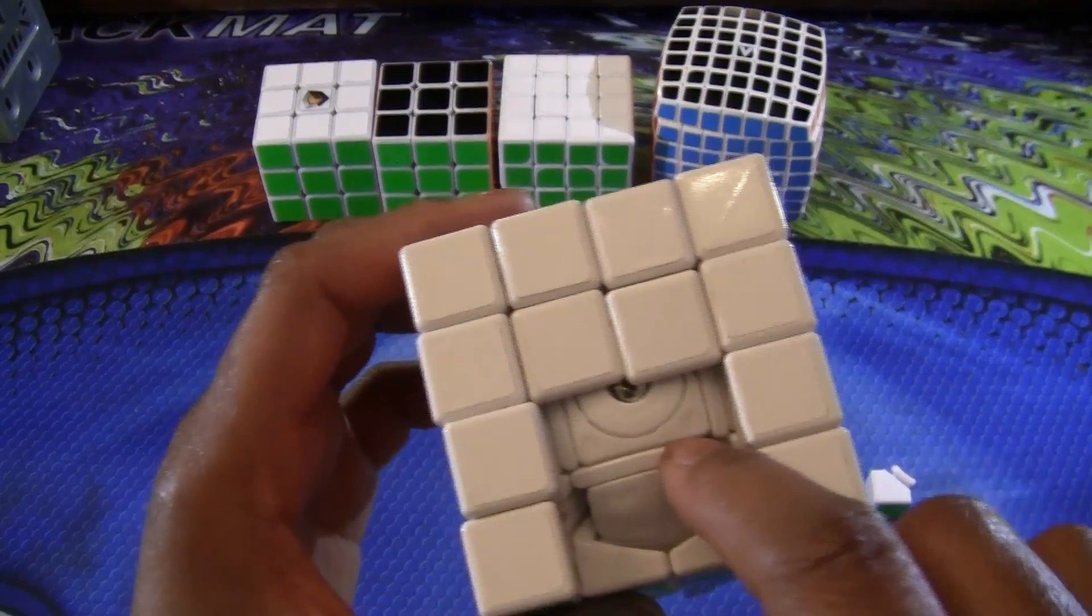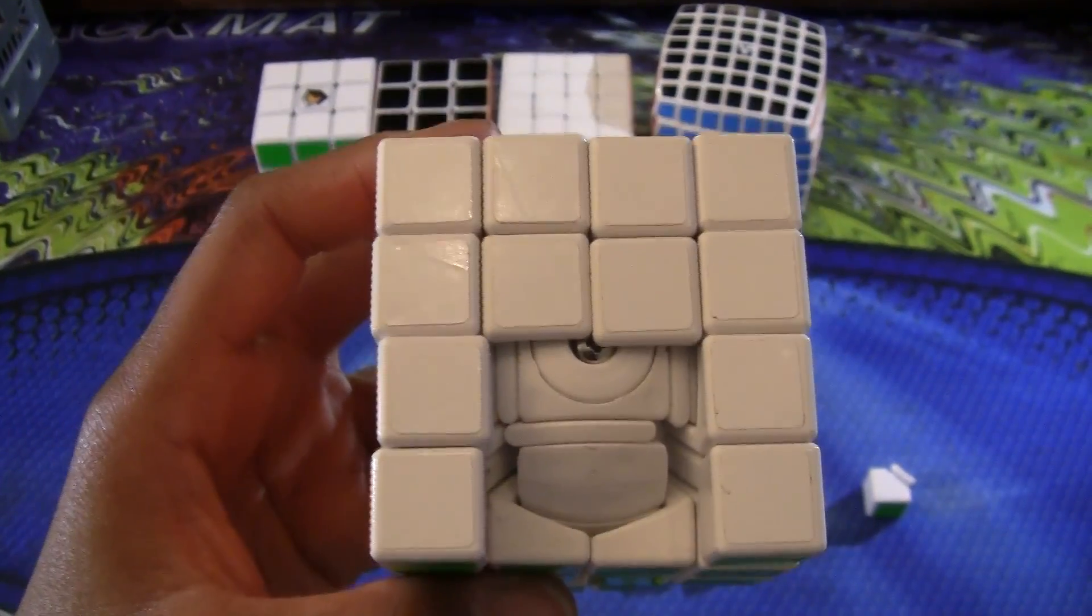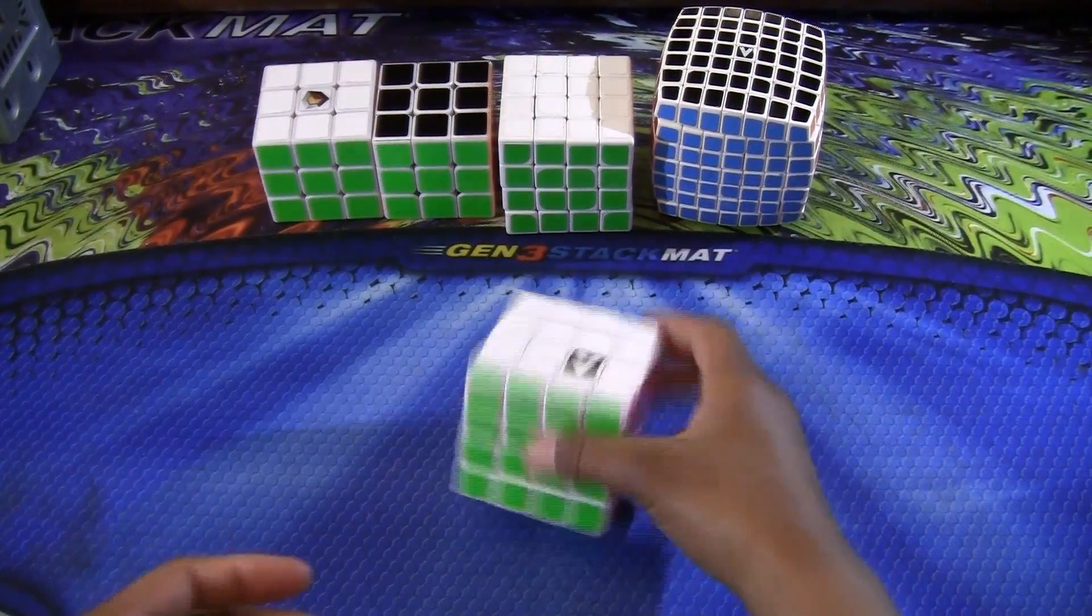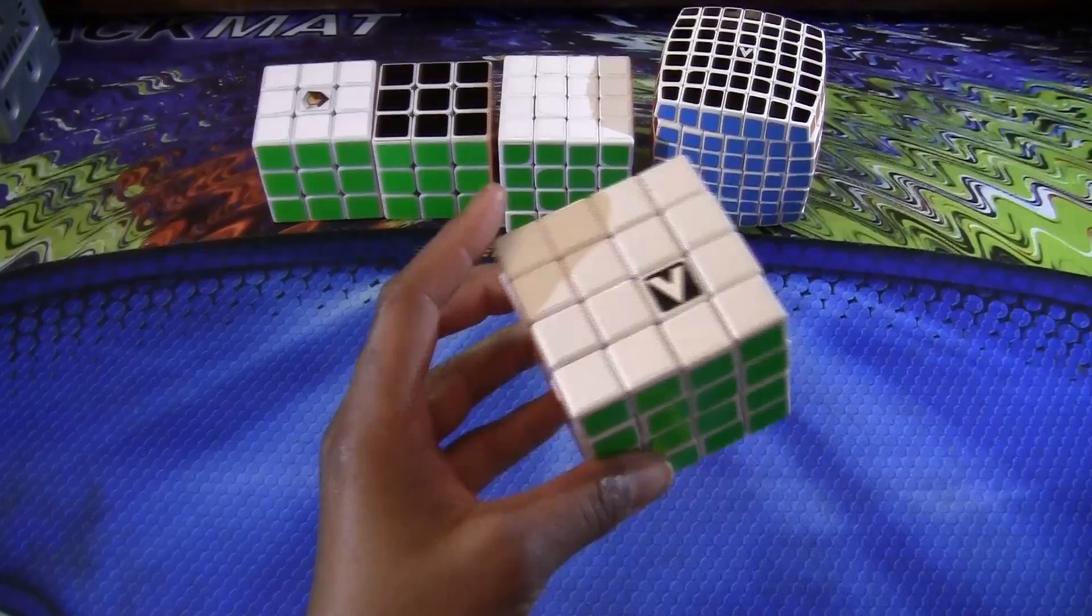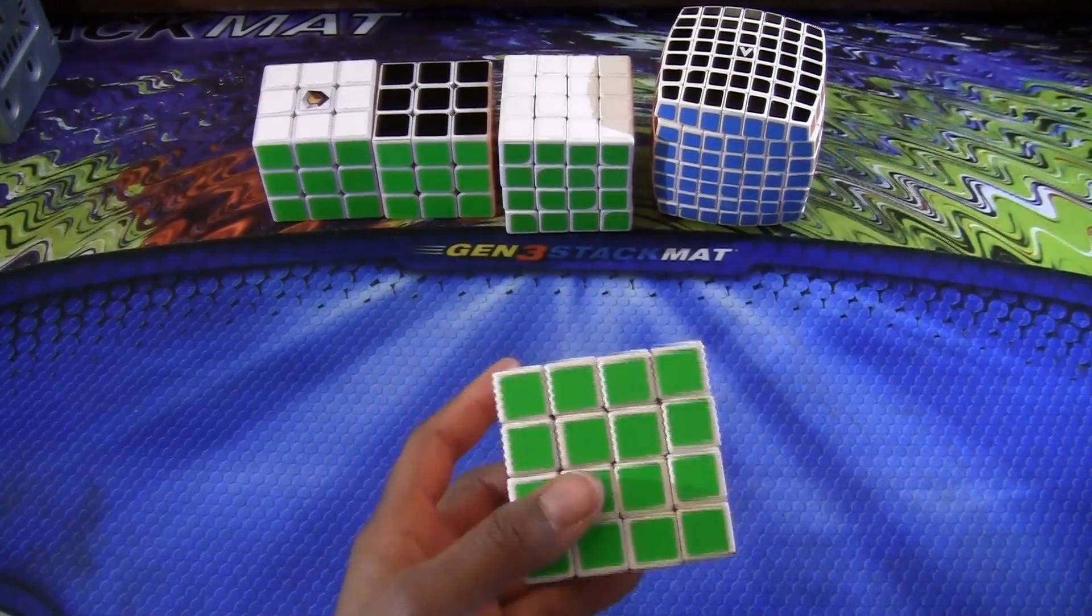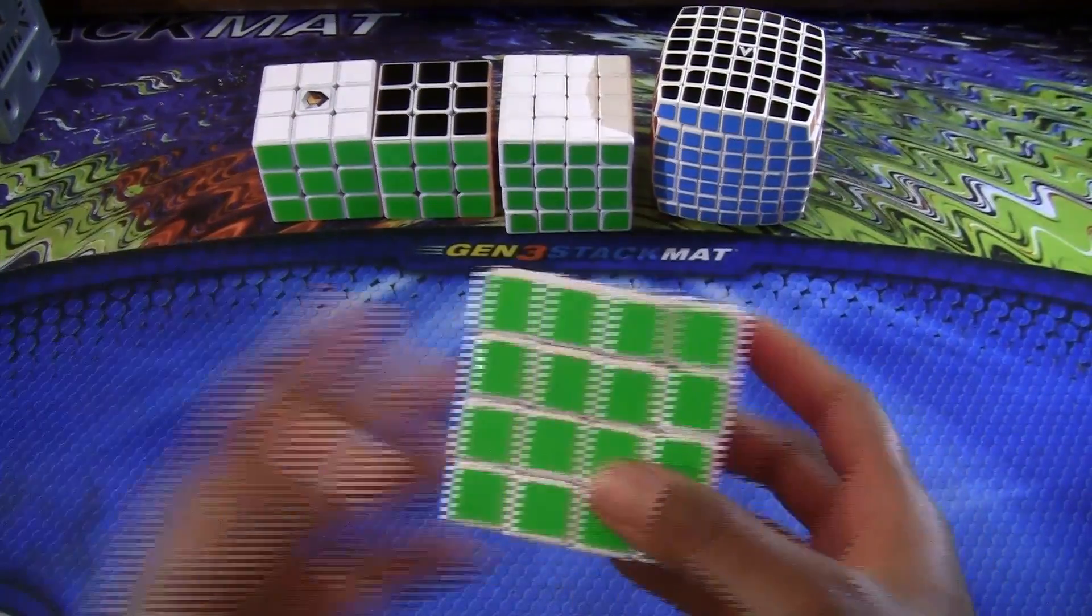So since this cube has rings, it's a little bit harder to assemble than a X-Cube 4x4. Alright guys, now that I showed you how the pieces look and a little bit of the mechanism. I'm just going to do a solve and then come back and give you my final thoughts of the cube and recommendations too.